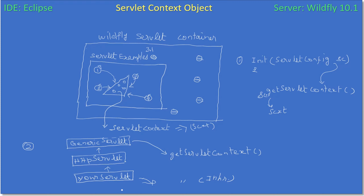That means if you have doGet or doPost, you can make a call to getServletContext and get the servlet context object. Any servlet can call getServletContext and it will return the same object to all the servlets running in a particular web application. This servlet context object is shared by all the servlets running inside the web application; the same goes for other applications hosted by the vendor-specific container.